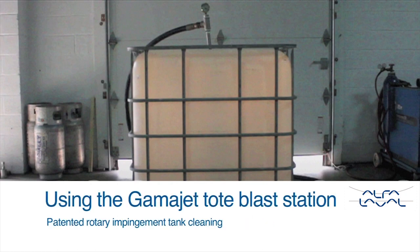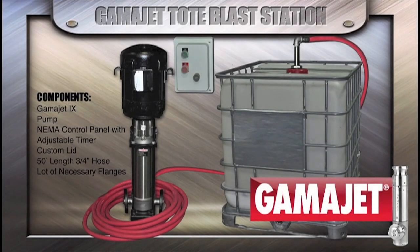There is a way to clean them quickly and economically with minimum use of resources using the GammaJet tote blast station. The system comes equipped with a GammaJet 9, pump, control panel with an adjustable timer, customized tote adapter, and all the necessary hoses and flanges.